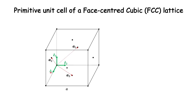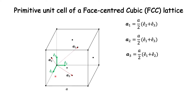In terms of the three unit vectors along the edges of the conventional unit cell, e1, e2, and e3, these three vectors can be conveniently represented as: a1 = (a/2)(e2 + e3), a2 = (a/2)(e1 + e3), and a3 = (a/2)(e1 + e2). These are nicely symmetric — in a1, e1 is missing; in a2, e2 is missing; and in a3, e3 is missing.